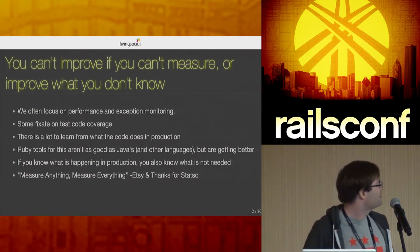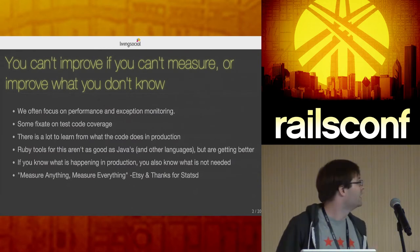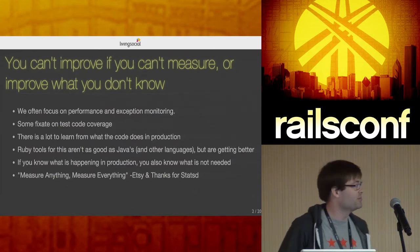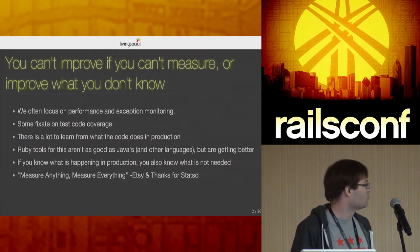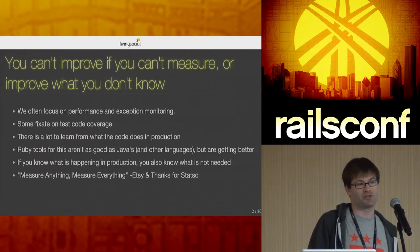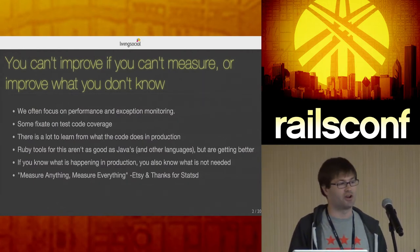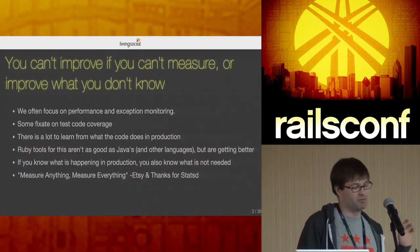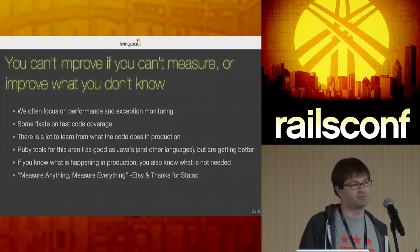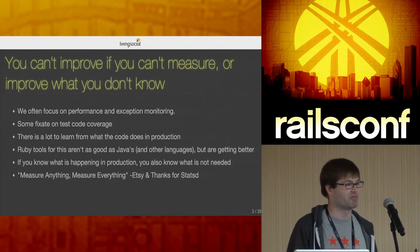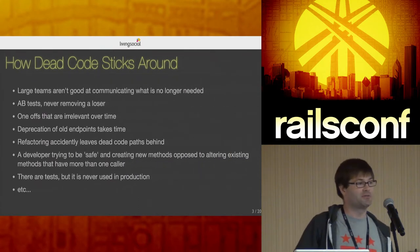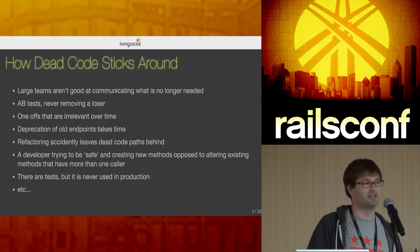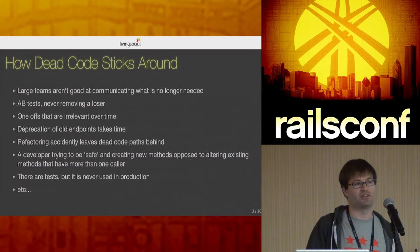You can't improve if you can't measure. We often focus on performance and exception monitoring, and some fixate on test code coverage, but there's a lot to learn from what your code actually does in production. Ruby tools aren't quite as good as Java tools, so we're working on improving them. Etsy has great posts about measuring production systems and graphing everything — they released statsd, which we rely on heavily.